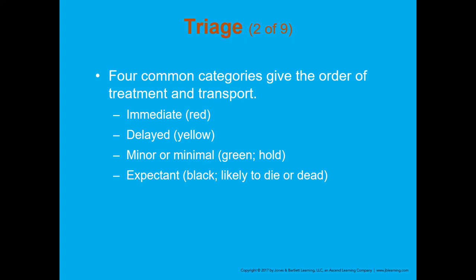There are four categories of triage, and those categories give us the order of treatment and transport. The four categories — we typically use colors to designate them — are red, yellow, green, and black. That is immediate, delayed, minor or minimal, and then expectant, which is dead or likely to die.